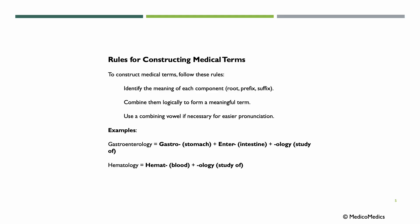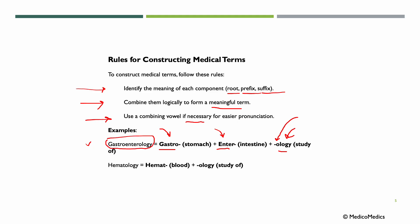There are some rules to keep in mind when constructing medical terms. First, identify the meaning of each component: the word root, the prefix, and the suffix. Then combine them logically to form a meaningful term, using a combining vowel if necessary for easier pronunciation. For example, gastroenterology: gastro means stomach, enter means intestine, and logi is the study of. Gastro is the word root, enter is the prefix, logi is the suffix. Adding the vowel O, you have gastroenterology.